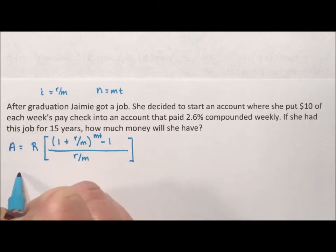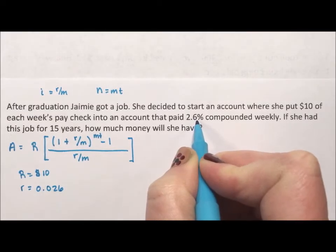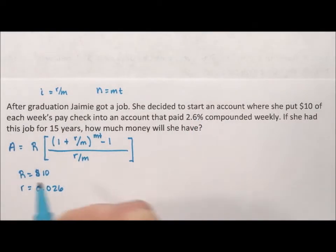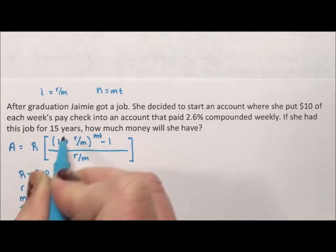R is what she's paying, so she's paying $10 each week. The little r is the rate, so the rate is 0.026. We divide by 100 to get this into a decimal. M is the number of times per year. It says weekly, so there are 52 weeks in a year. And the number of years is 15 years.